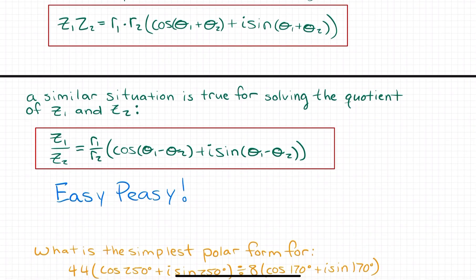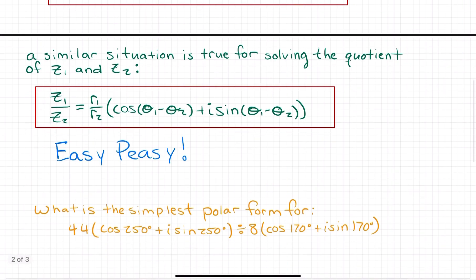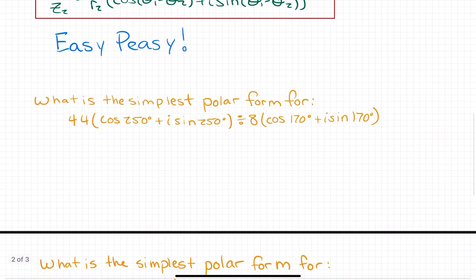A similar situation is true when finding the quotient. Instead of r1 times r2, it's r1 divided by r2, and instead of taking the sum of your two angles, you take the difference. Specifically, it will be theta 1 minus theta 2 for z1 divided by z2, or theta 2 minus theta 1 for z2 divided by z1. Easy peasy.